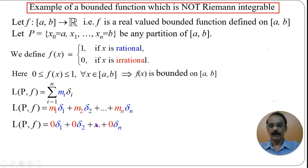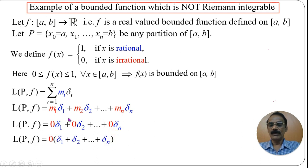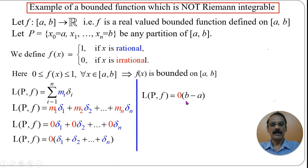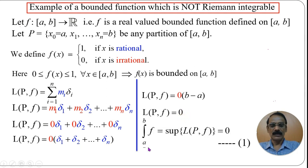Since every subinterval contains irrational numbers, the infimum mᵢ of f on each subinterval equals 0. So m₁ = m₂ = ... = mₙ = 0. Therefore L(P, f) = 0·(Δ₁ + Δ₂ + ... + Δₙ). Since the sum of the lengths of all subintervals equals b − a, we get L(P, f) = 0·(b − a) = 0.